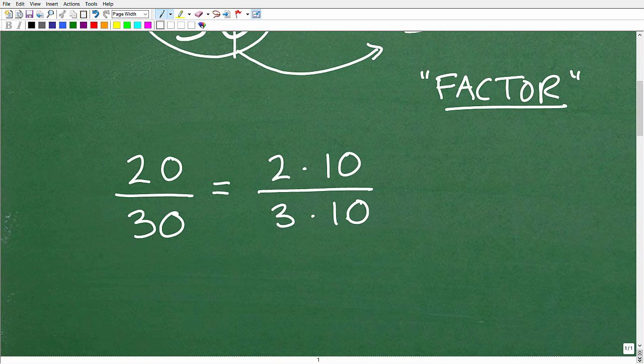The factors of 20, or we can factor 20 as 2 times 10. And then 30 we can factor as 3 times 10. So the whole idea behind reducing a fraction is to try to find like factors, the same factors in the numerator and the denominator.